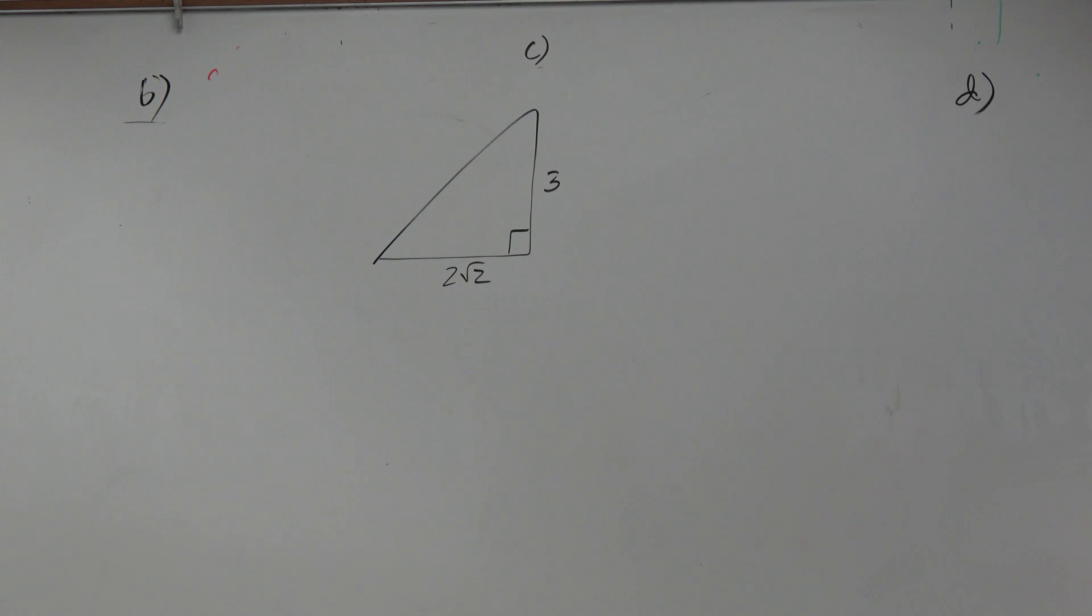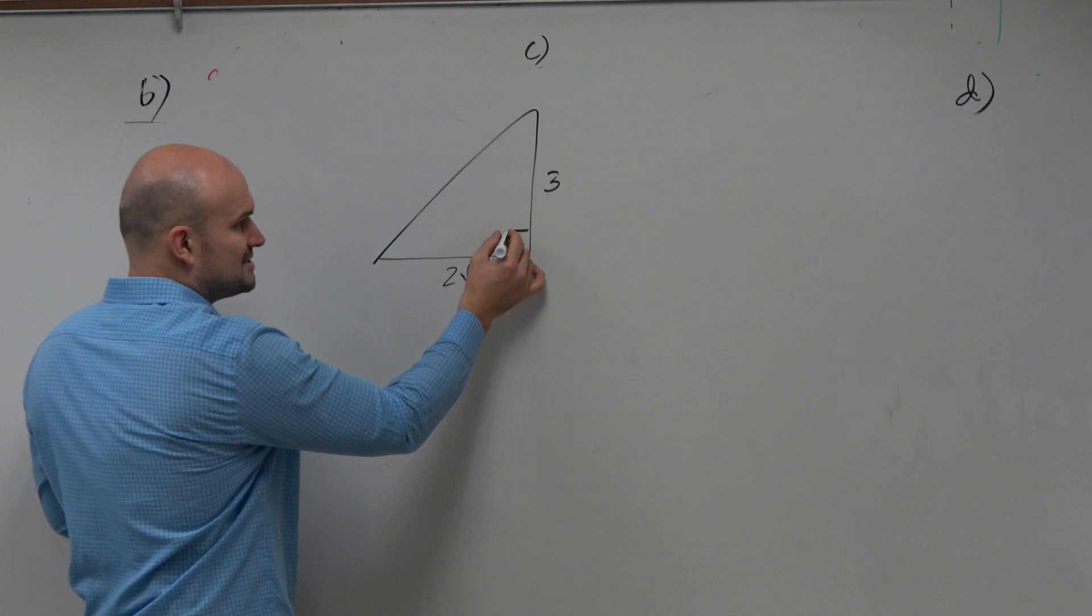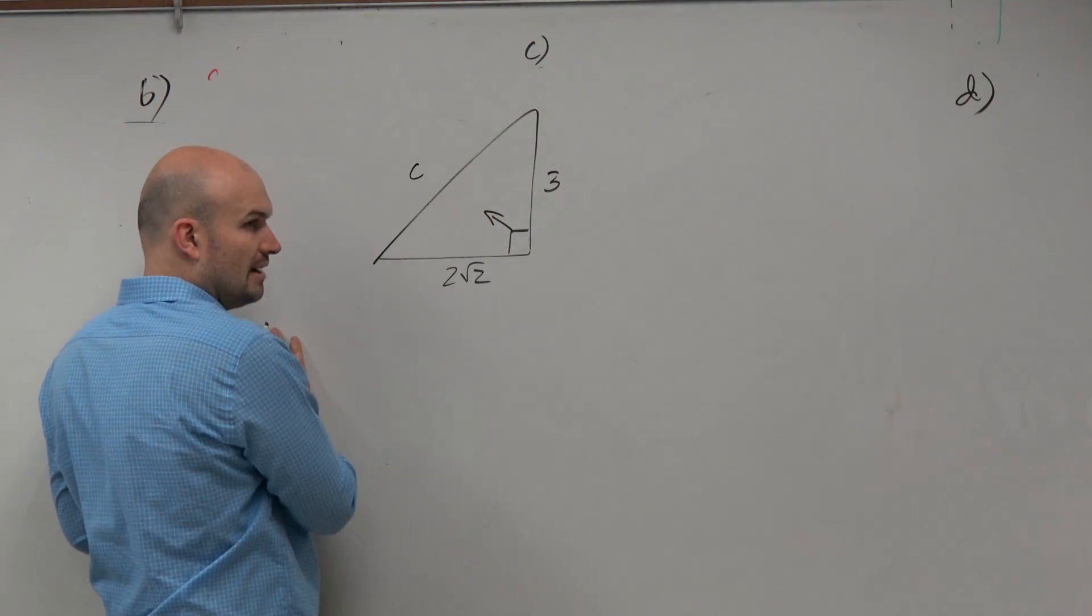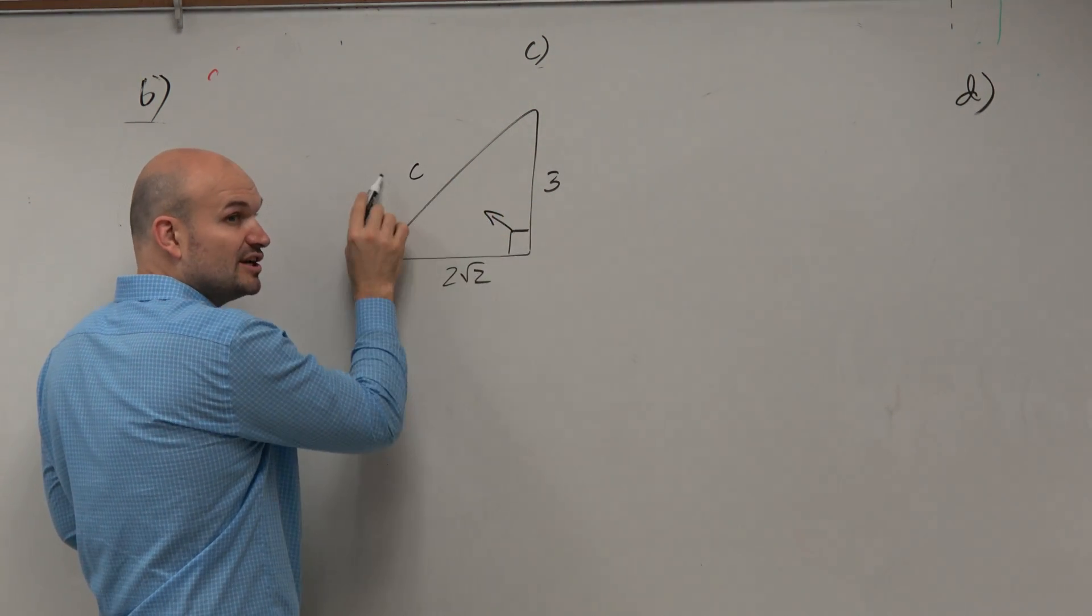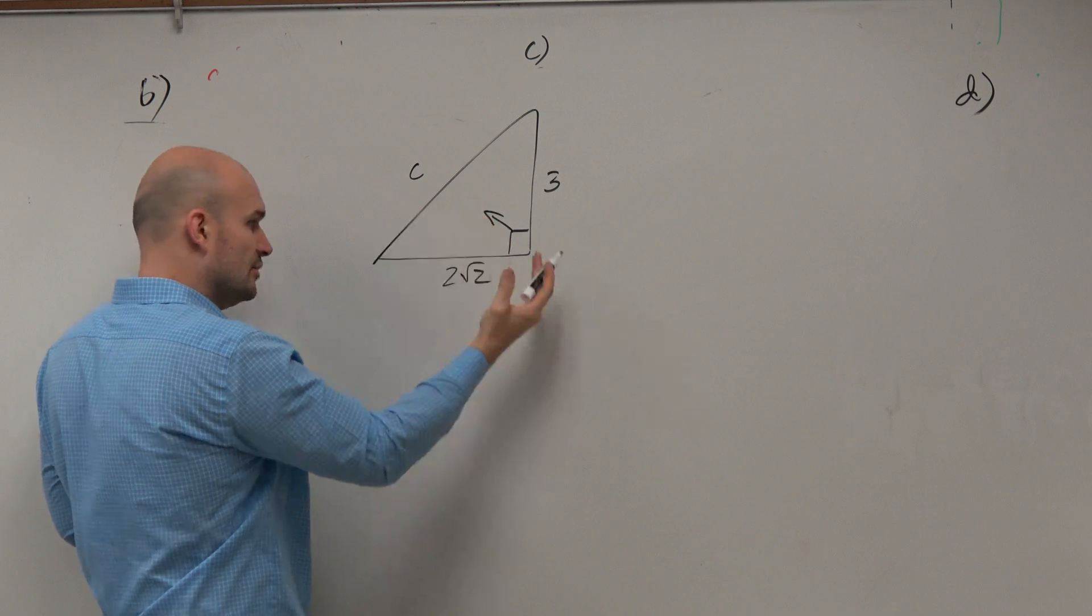So the main thing when we're doing the Pythagorean theorem to go ahead and solve for our missing side, let's call this our hypotenuse. But we know the hypotenuse is always directly across. So going forward.